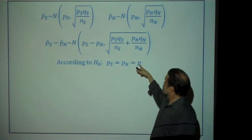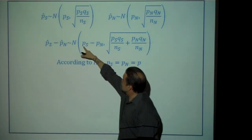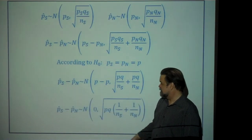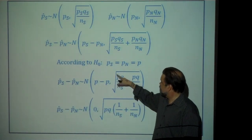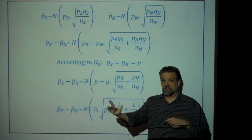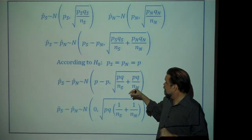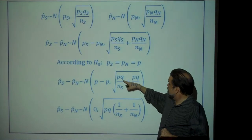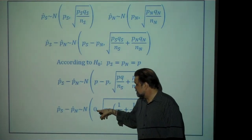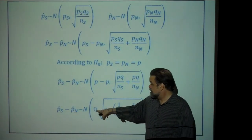Since the null says p-S and p-N are the same, we call it P — no subscripts needed. P minus P equals zero, and the standard deviation simplifies to the square root of PQ over n-S plus PQ over n-N. We can factor out PQ, giving us a normal random variable with mean zero and standard deviation equal to the square root of PQ times (1/n-S plus 1/n-N).